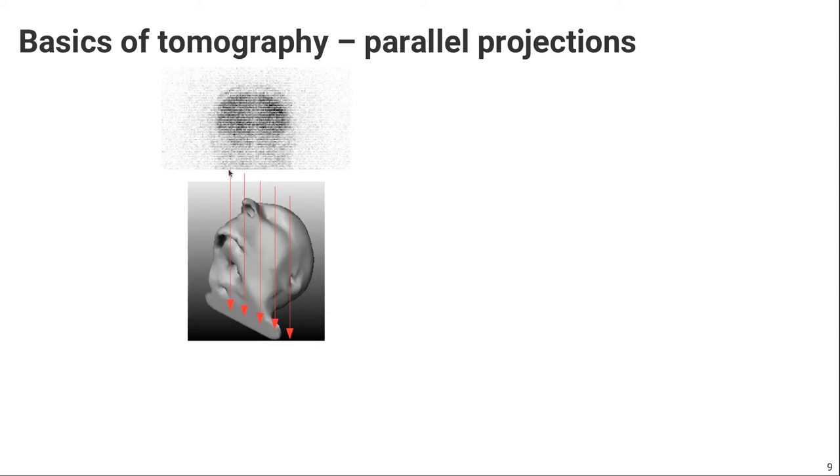So a projection would be if we would take this 3D distribution and we would project it onto one plane. We can do that by calculating the line integrals along a certain direction. We have many line integrals, for example here in this example going in the vertical direction, from top to bottom. So if we do that we project the 3D distribution into a 2D plane.